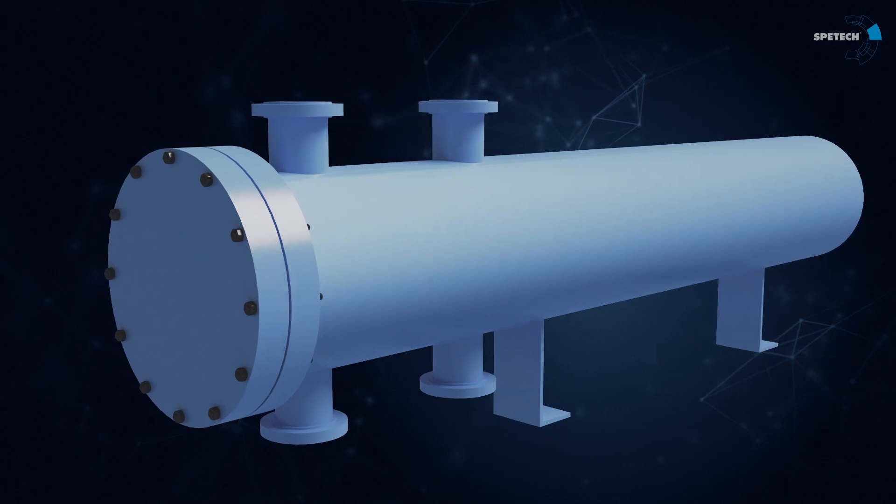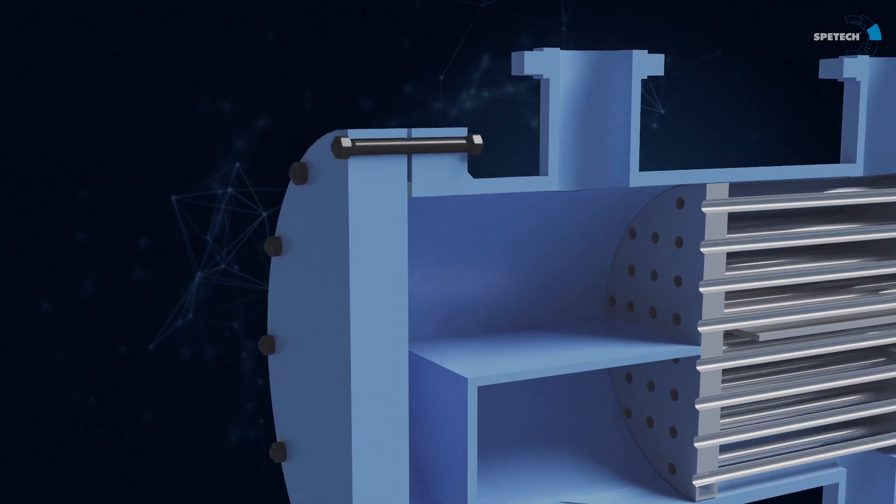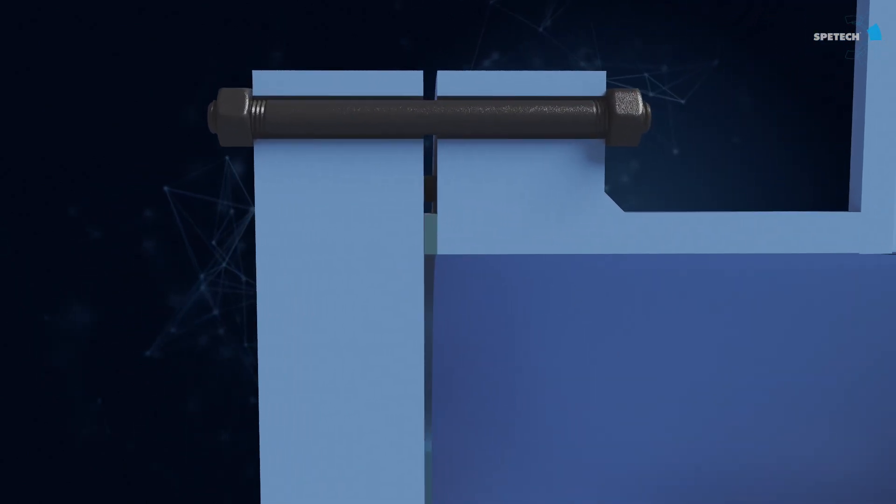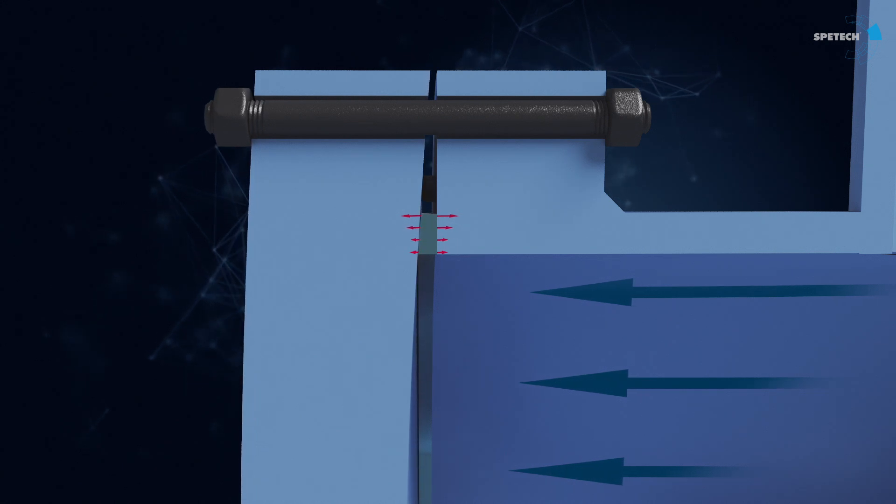Metal diaphragms are a special kind of flange seals used in heat exchangers operating at high pressures, high temperatures, or where both of these parameters are at a high level.